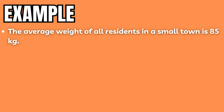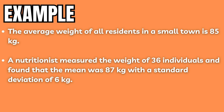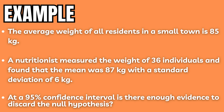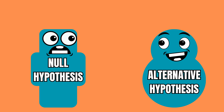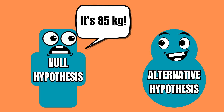The average weight of all residents in a small town is 85 kilos. A nutritionist believed that the true mean is different. She measured the weight of 36 individuals and found that the mean was actually 87 kilos with a standard deviation of 6 kilograms. At a 95 percent confidence interval, is there enough evidence to discard the null hypothesis?